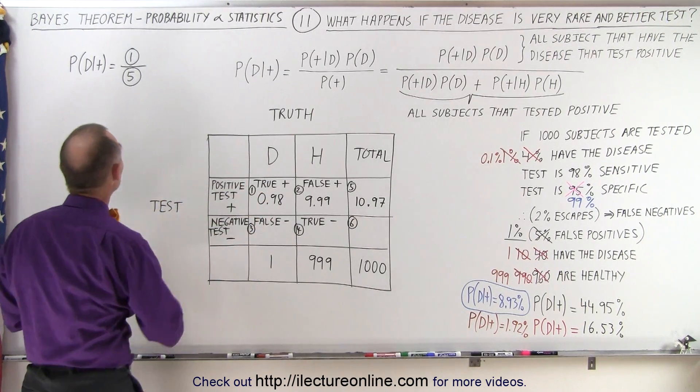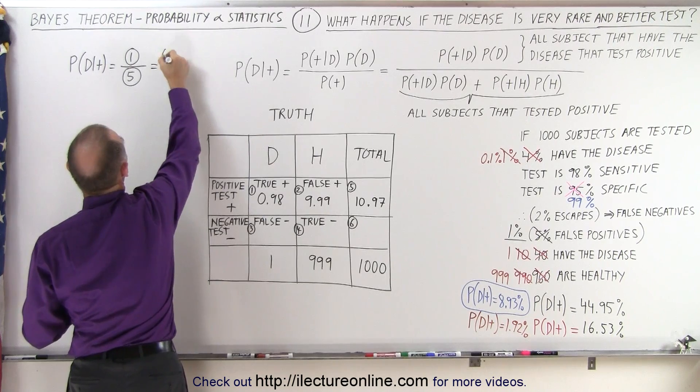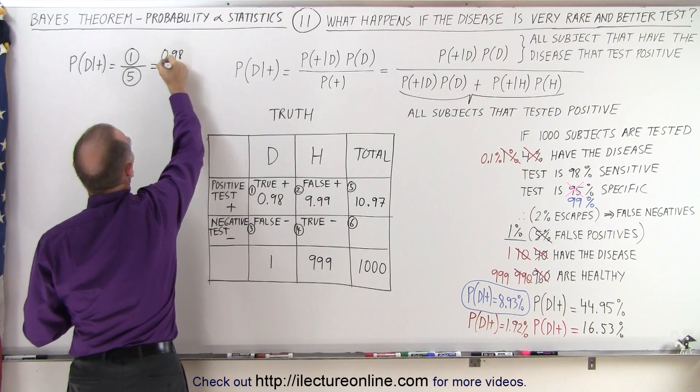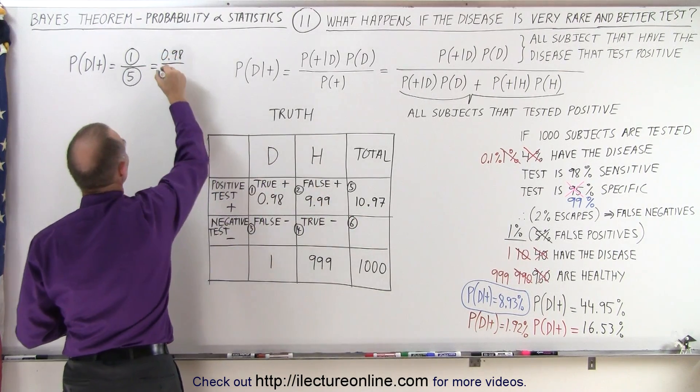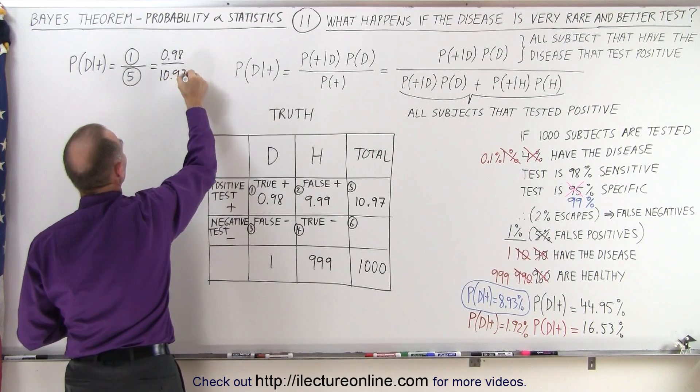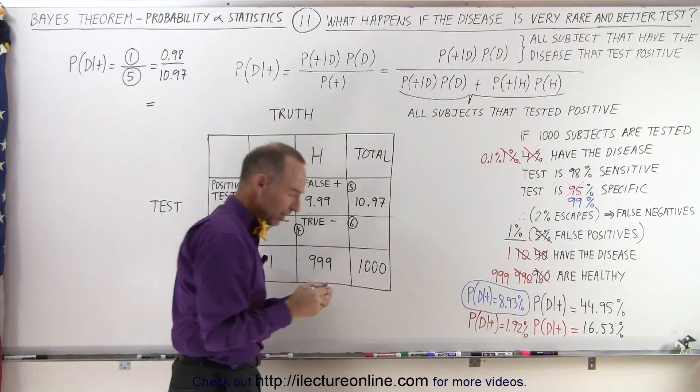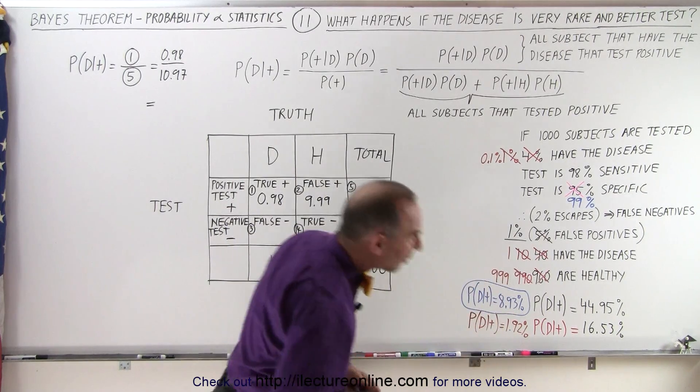So what we do now is we take number 1, which is 0.98, and we divide it by 10.97. And that should come out to the exact same number that we had over there. It looks close, so let's see what we get.